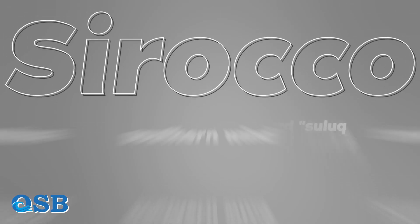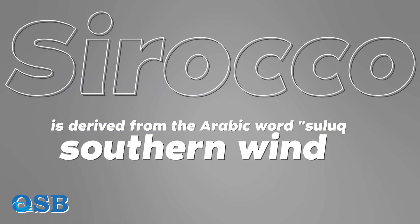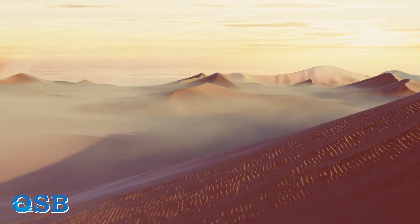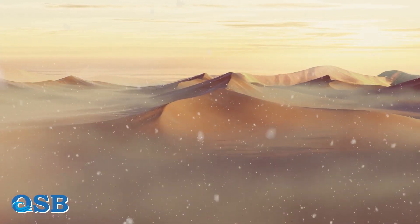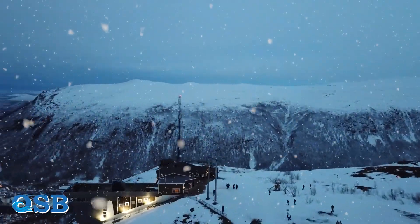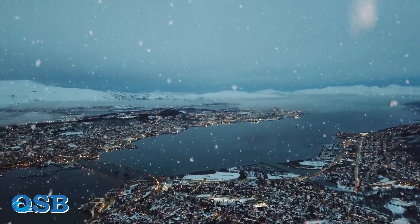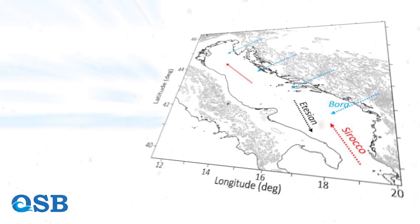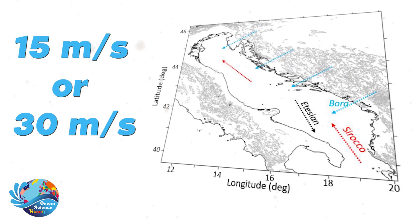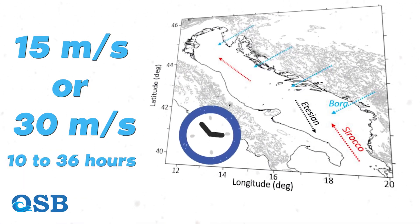Sirocco is derived from the Arabic word sulik, which means southern wind. Deserts in North Africa and Arabia are the source of this wind. In cold seasons, the Adriatic Sea is affected by a well-developed Sirocco, although this wind is present most of the year. Wind speeds can reach more than 15 meters per second, or even 30 meters per second in some cases, with an average duration of 10 to 36 hours.